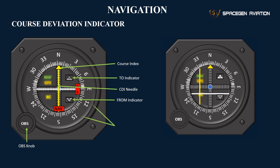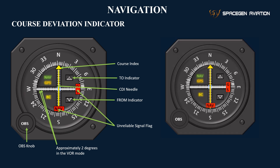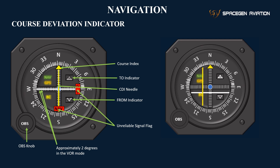A signal flag, NAV or GS, warns of unreliable signals to prevent reliance on incorrect information. Finally, the 2-degree scale provides a precise deviation measure, with each mark representing approximately 2 degrees, enabling pilots to make accurate adjustments.